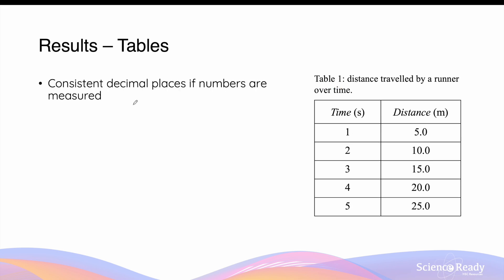If the dependent variables that you present in a table are measured and not calculated, they must have consistent decimal places. For example, if the distance measured in this table are using a measuring tape, which only gives you measurements to 1 decimal place, then all your numbers should have 1 decimal place, which is why I have written 5.0 all the way to 25.0.